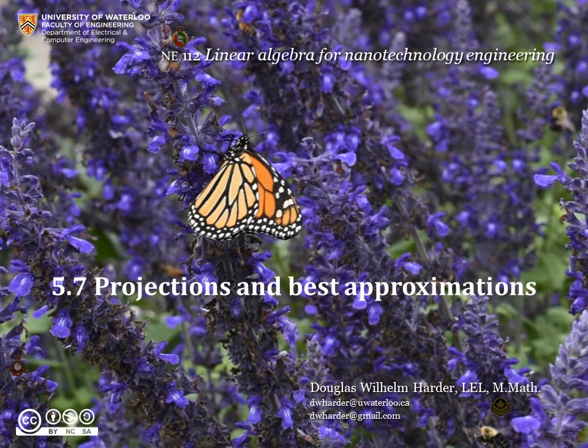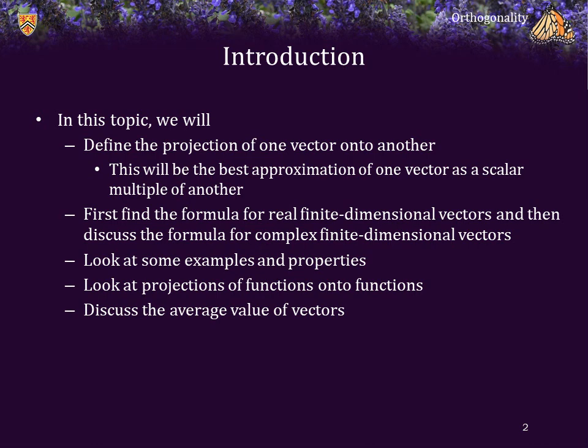Good day. For those of you who do not know me, my name is Douglas Harder, and in this topic we're going to discuss projections and best approximations. We will define the projection of one vector onto another — this is the best approximation of that vector as a scalar multiple of the other. We will find the formula for real and complex finite dimensional vectors, look at examples and properties of the projection, projections of functions, and the average value of vectors.